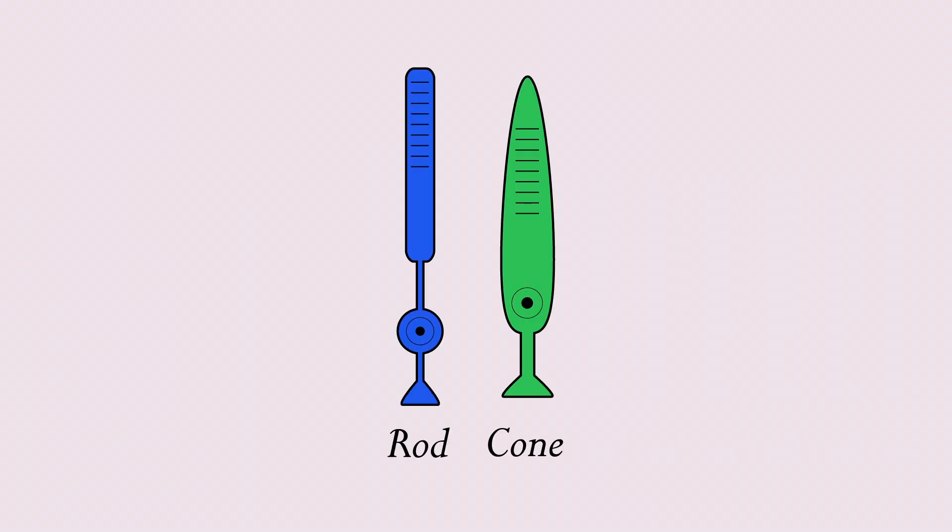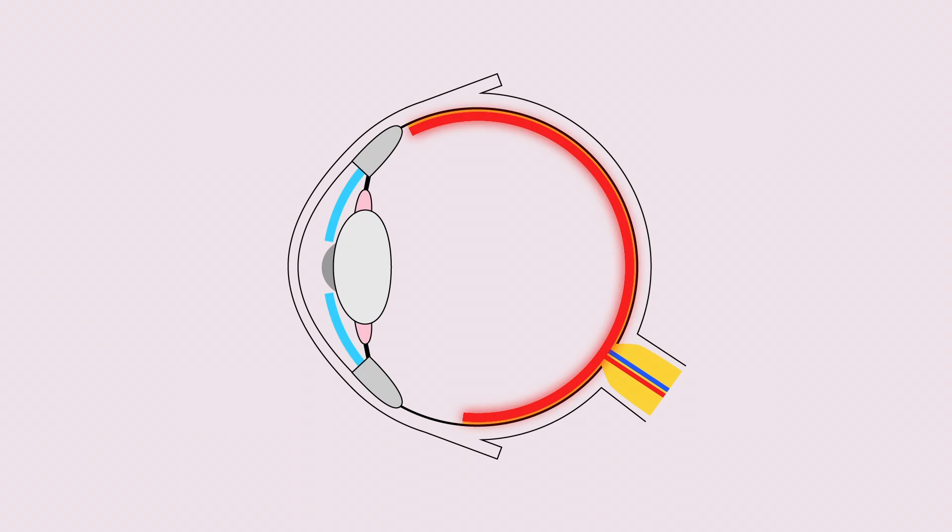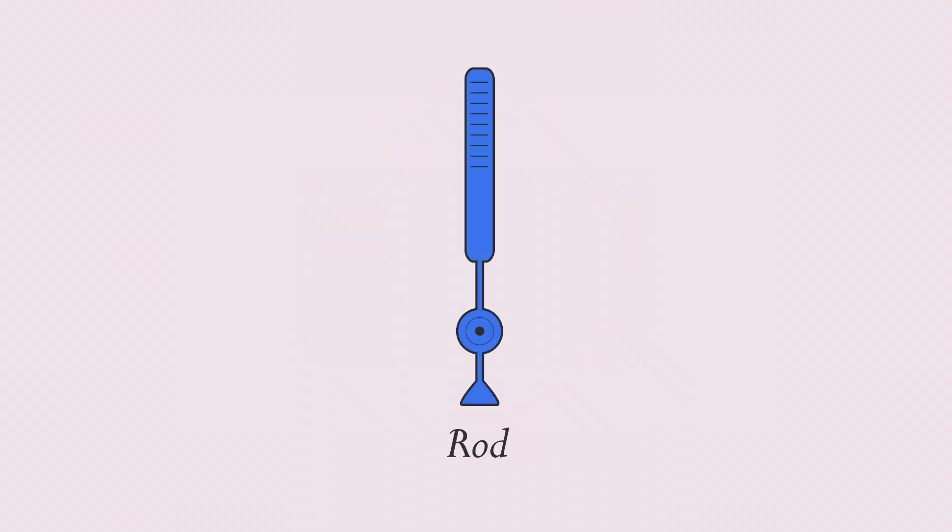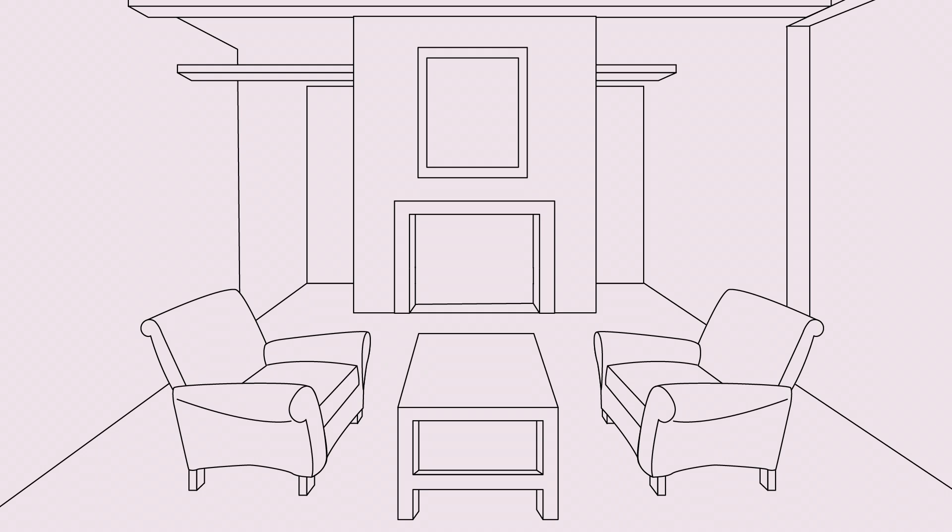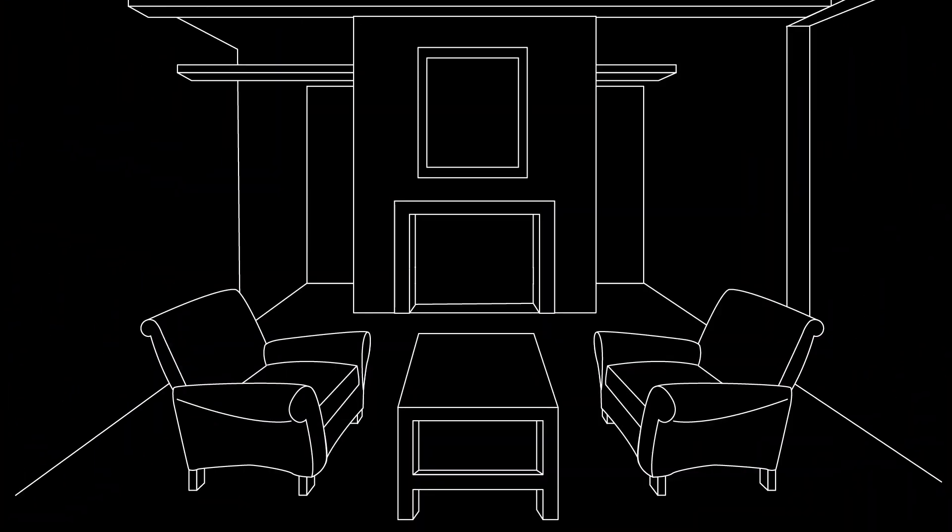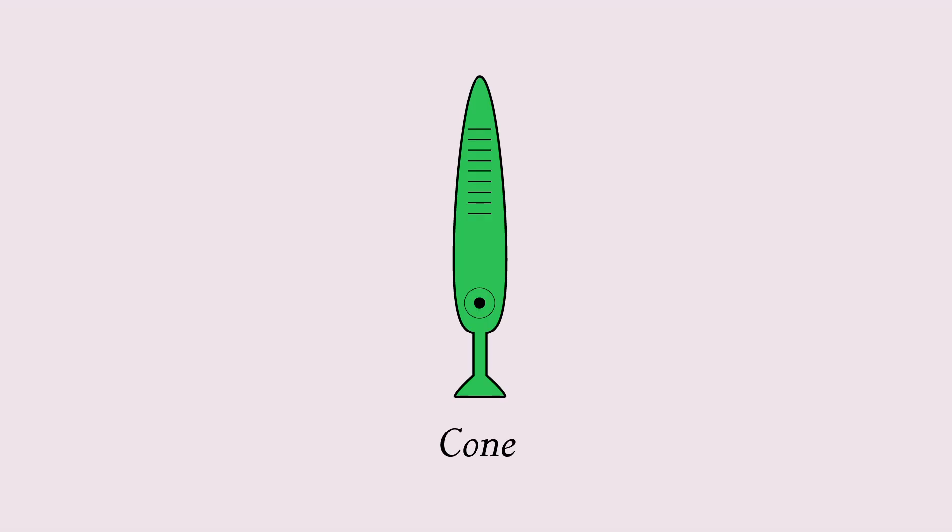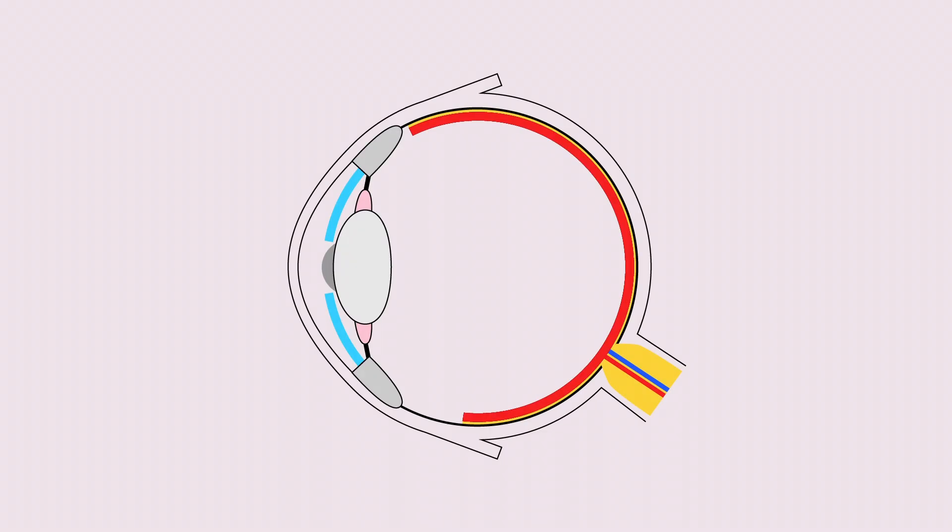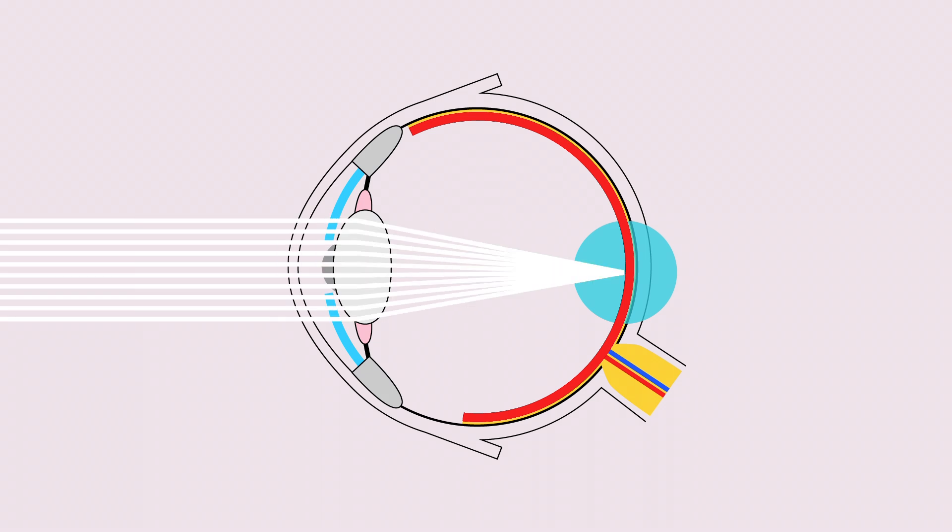Rods and cones, the two types of light-sensitive cells located on the outer retina, have different jobs. Rods are responsible for our perception of light and dark, and our peripheral vision. Cones are what allow us to see color. They are found in the center of the retina, where light is focused.